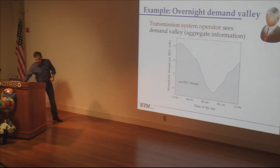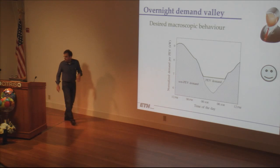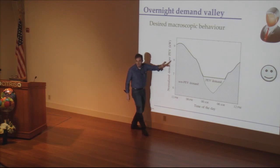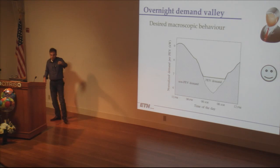You'd like to take the EV demand and put it all in that valley. If you let them do their thing you won't get this — you get a random pattern where they all come home, plug in, and charge, and most of it happens during times when you already have very high demand. That's undesirable. So you'd like to somehow tell them to do this, but without telling individuals individually what to do.